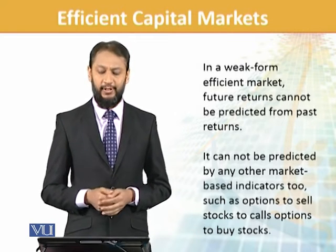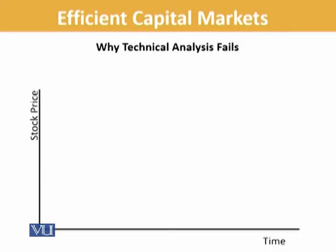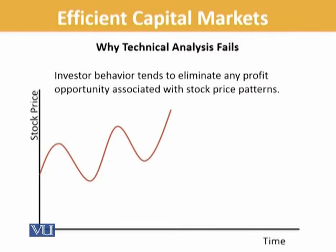Let's build a basic understanding. If you look at technical analysis — investors in markets do two types of analysis: technical analysis and fundamental analysis. Technical analysis means you predict future prices based on current prices — based on current stock price you see what will happen in future through graphs and trends. It works on statistical models.